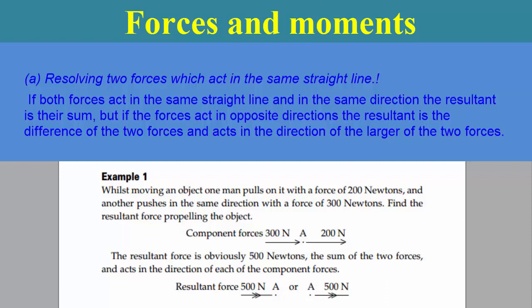Example 1: Whilst moving an object, one man pulls on it with a force of 200 Newtons and another pushes in the same direction with a force of 300 Newtons. Find the resultant force propelling the object. The resultant force is 500 Newtons — the sum of the two forces — and acts in the direction of each of the component forces.